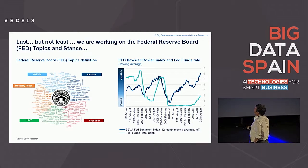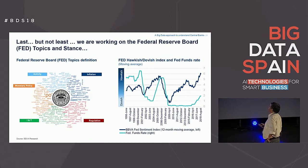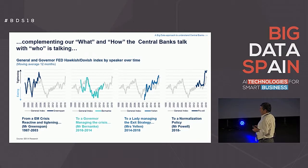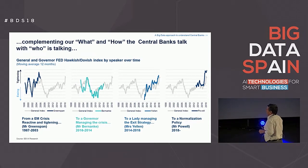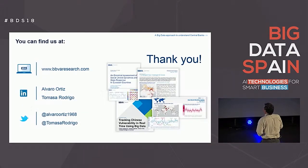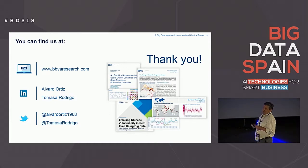Last but not least, we also use this analysis for the Federal Reserve. As you can see in the last slide, we can use all of this to identify how different people talk relative to the norm — and this is not the same for Greenspan, Bernanke, Yellen, or Powell. Remember that all our analysis can be found on our web page. Thank you very much.